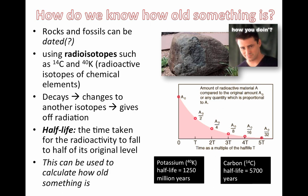If we're looking at things that are less than 10,000 years old, then carbon would be the best thing to use. Carbon dating has a half-life of 5,700 years. The half-life is the time taken for the radioactivity to fall to half of its original level. You can see that every given unit of time, the amount of radioactivity drops by 50%.